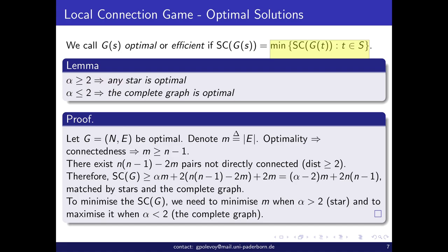The first lemma is simple: if alpha is at least 2, then any star graph is optimal. If alpha is at most 2, then the complete graph is optimal. Note we are not saying these are the only optimal graphs — just that they are optimal.